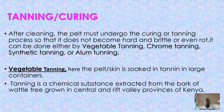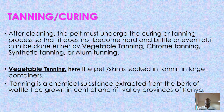There is the tanning stage, also known as the curing stage. This curing stage can be done in a number of ways. For instance, there is the vegetable tanning process, the chrome tanning process, the synthetic tanning process, or the alum tanning process.